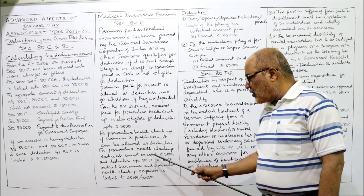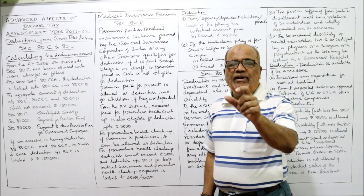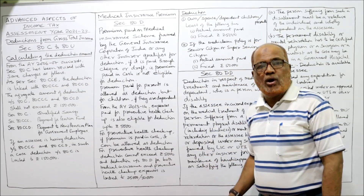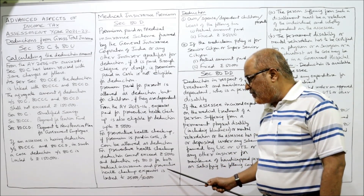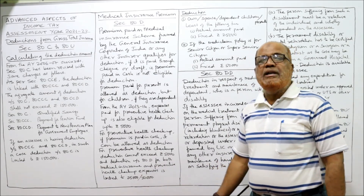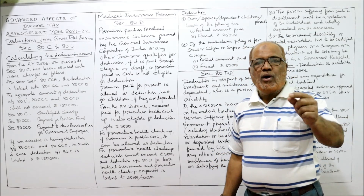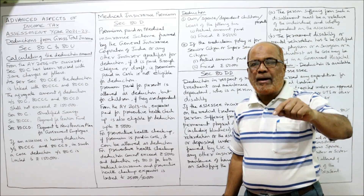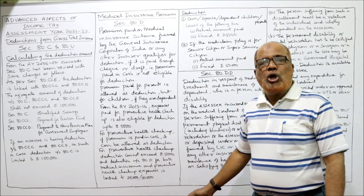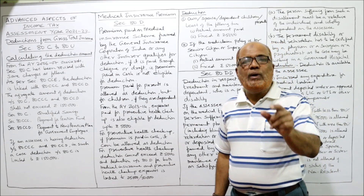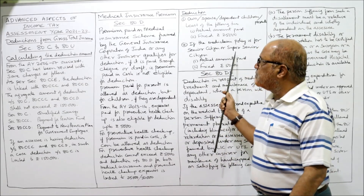For preventive health check-up, the deduction cannot exceed Rs. 5,000 — that is the limit. The maximum limit of medical insurance premium and preventive health check-up expenses combined together should not exceed Rs. 25,000 or Rs. 50,000, depending on the situation — which I will explain now.